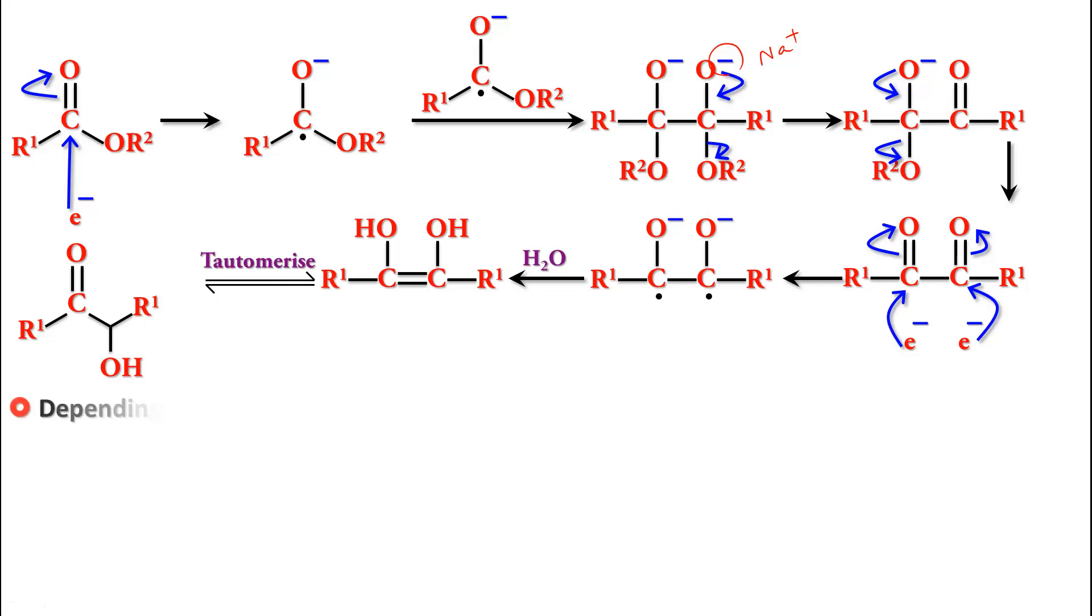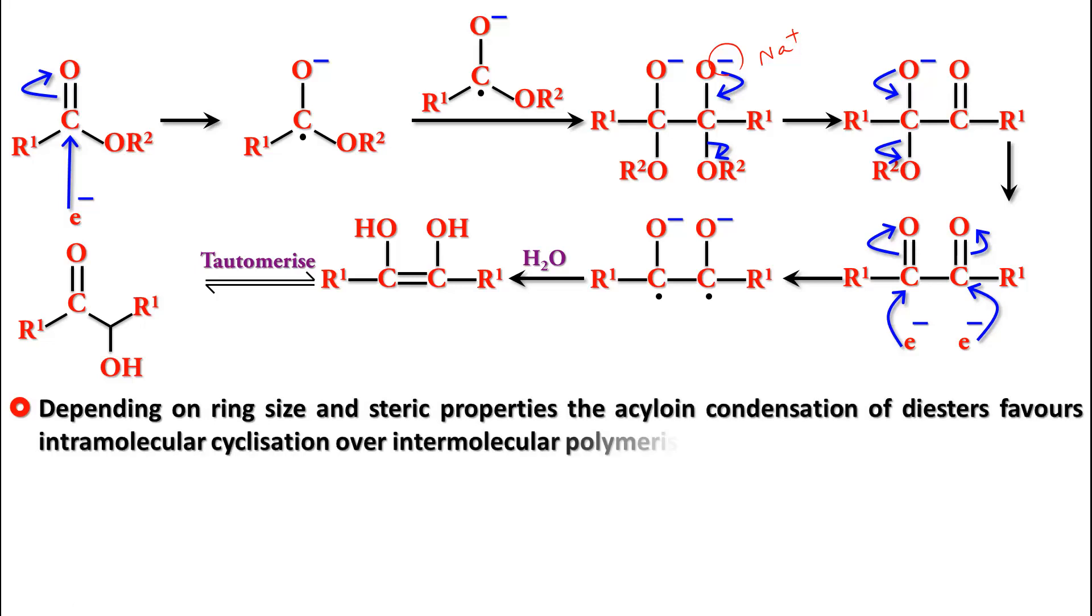So depending on the ring size and steric properties, the acyloin condensation of diesters favors intramolecular cyclization over intermolecular polymerization. So if I have a diester like this, then what will eventually happen is, as you can see in this reaction, the two carbon atoms, the ester carbon atoms, they are going to combine.